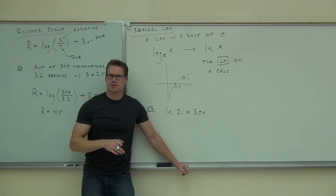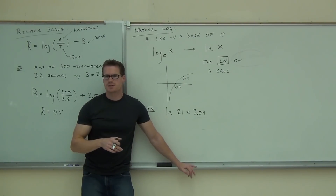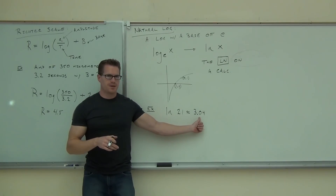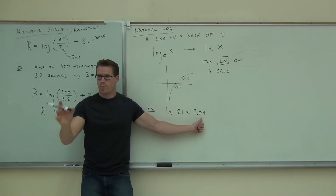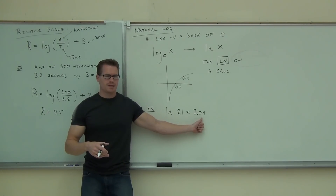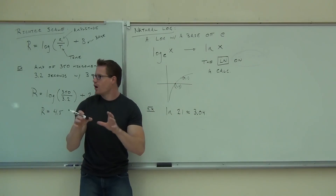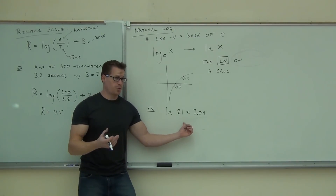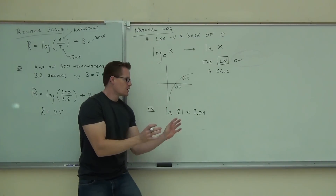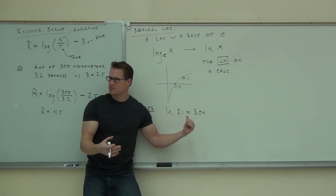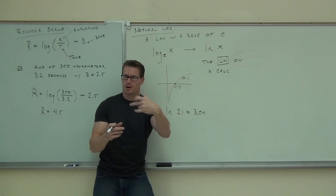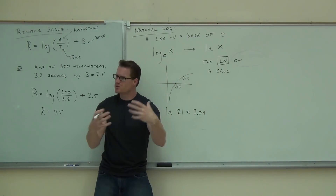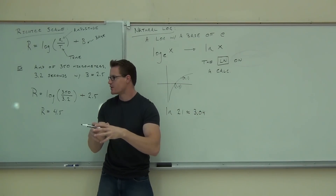Why is LN of 21 bigger than log of 21? Log of 21 was about 1.32, but LN of 21 is about 3.04. Because log is base 10 and LN is only base E, about 2.72. Since 2.72 is a smaller number, you have to raise it to a larger exponent to get the same value. So your LN values will be larger than your log values for the same input. LN of 21 means: E to what power gives you 21. Try LN of 15 as well.